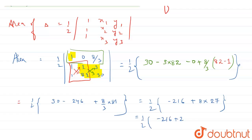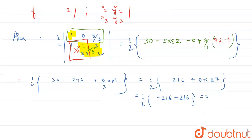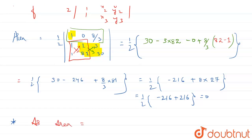And it comes out to be 0. So you can see that the area has come out to be 0, and since the area is 0, we can say that the points are collinear.